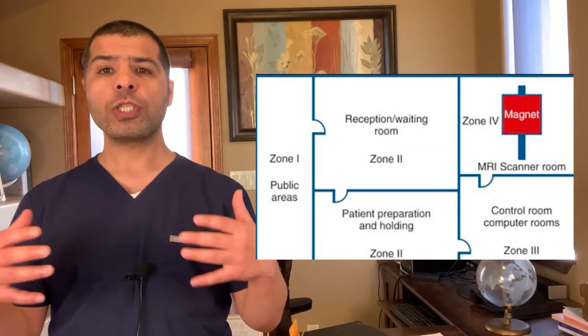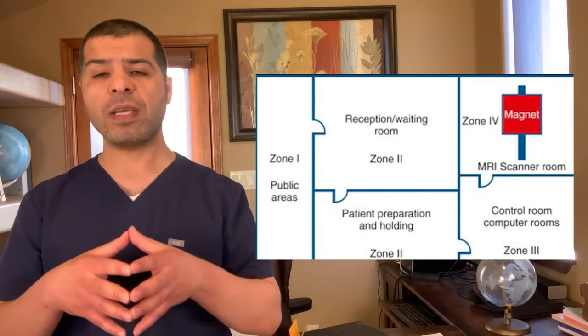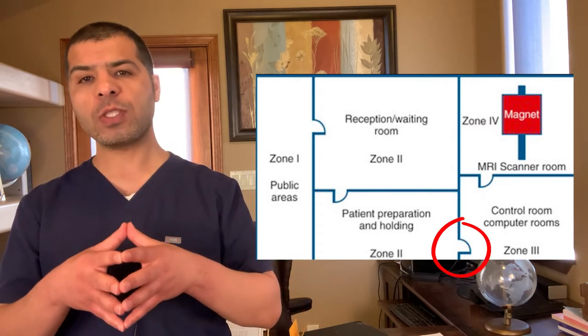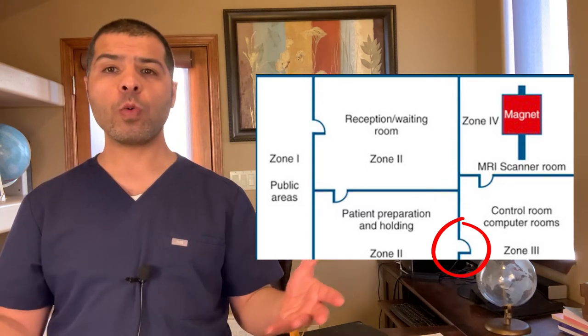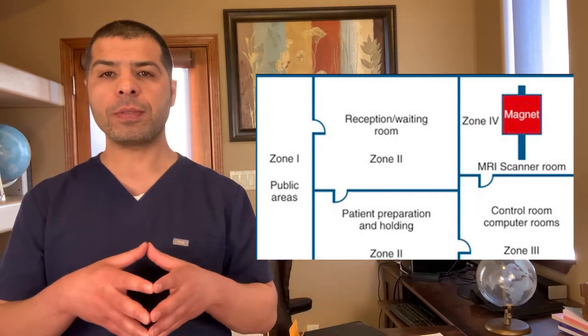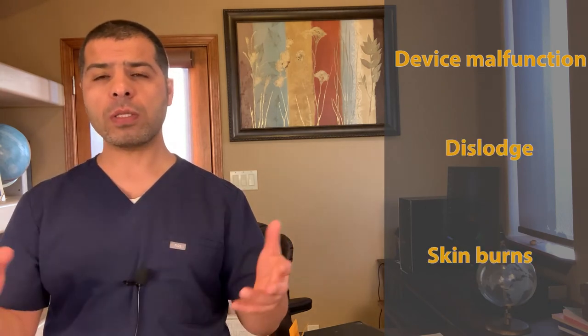Zone three is the area around the magnet room — there is a potential magnetic field in this zone, which is why there is usually a locked door between zone two and zone three. And finally, zone four is the magnet room itself, where the physical risks are at their greatest. Because of the strong magnetic field in zone four, it is very important to perform a thorough screening process to avoid any potential harm if any magnetic objects inside or outside the body are present. Device malfunction, dislodgement, and skin burns are all possible complications.